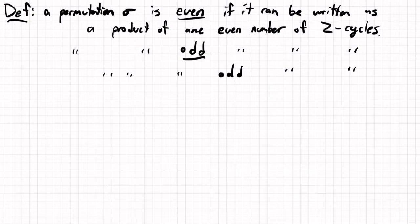So some examples would be: the permutation (1 2) is odd. The identity permutation is even. Let's do some less trivial examples.